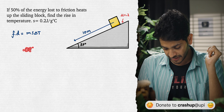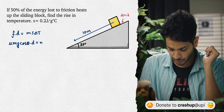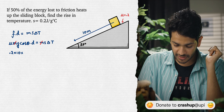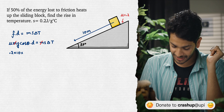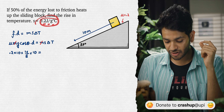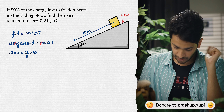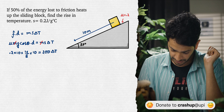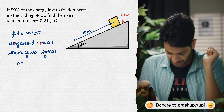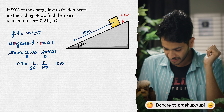The correct answer is 0.08°C. Substituting: µmg cosθ × d = ms∆T; mass cancels. µ = 0.2, g = 10, cos37° = 4/5, d = 10 m. Specific heat = 0.2 J/g = 200 J/kg·°C (after ×1000). So: 0.2 × 10 × (4/5) × 10 = 200 × ∆T. Simplifying: ∆T = 4/50 = 8/100 = 0.08°C.